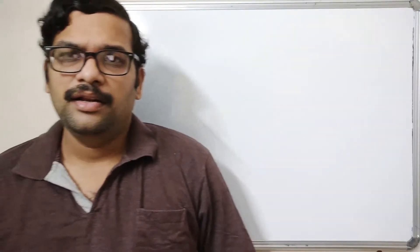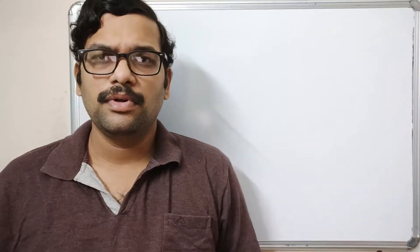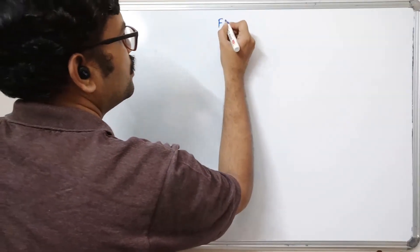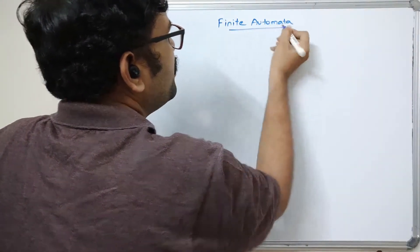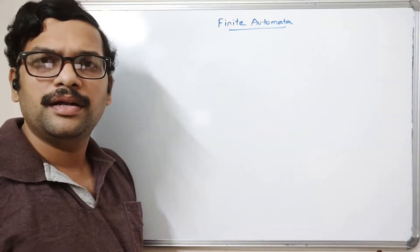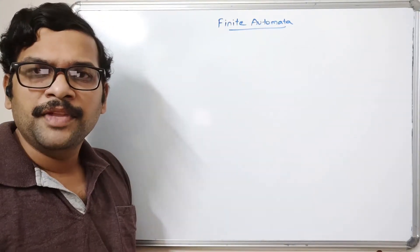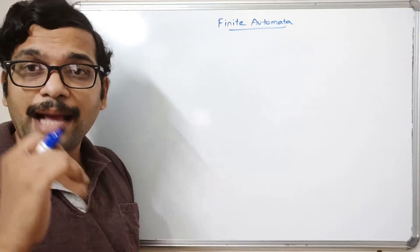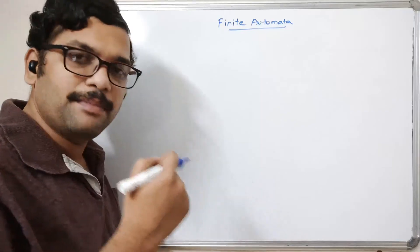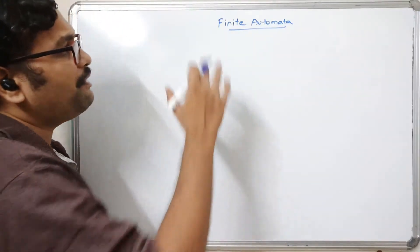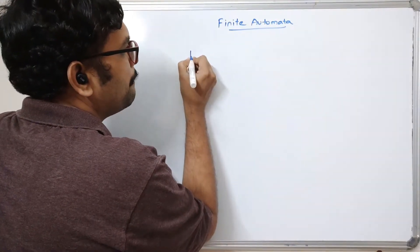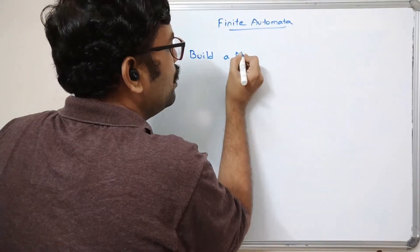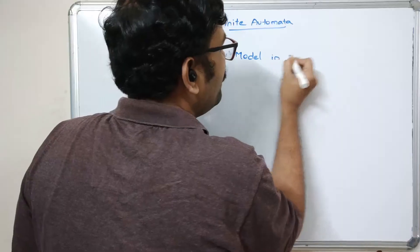Hello friends, welcome back to our channel. So in today's session, we'll discuss about the introduction to finite automata in automata theory. In the previous session, we have seen what automata is, and now we'll see the finite automata. Automata is a mathematical model or an abstract machine, and developing that abstract machine or building a model with a finite number of states is called finite automata.